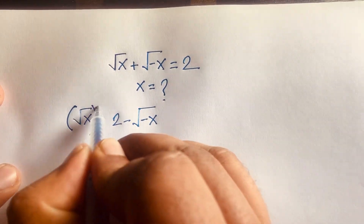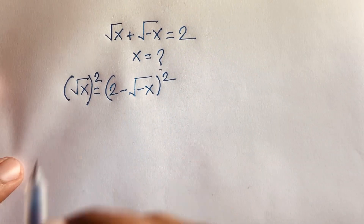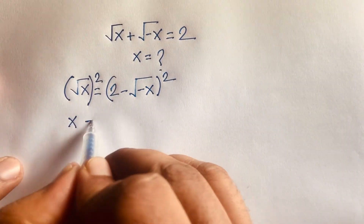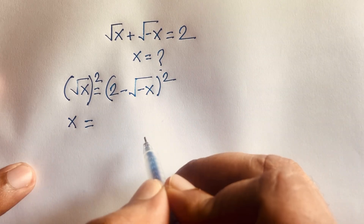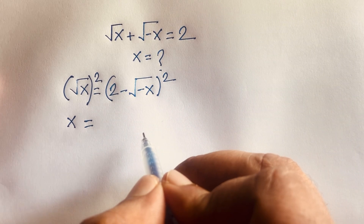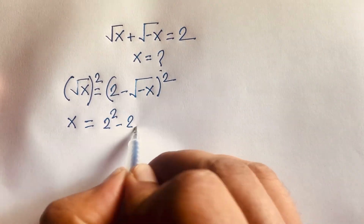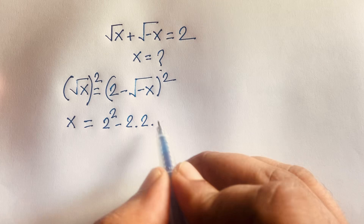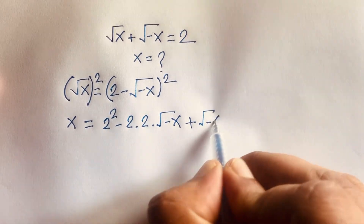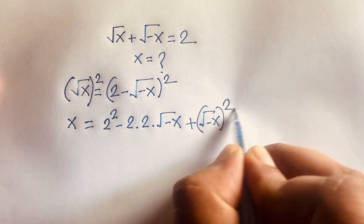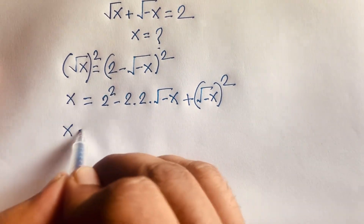If I square both sides, the square roots cancel. Using the identity (a - b)² = a² - 2ab + b², I expand the right side: 2² minus 2 times 2 times square root of negative x, plus square root of negative x whole squared.